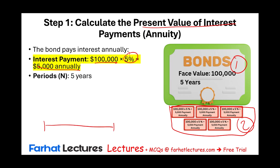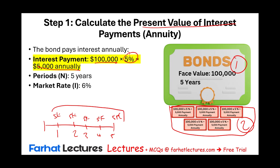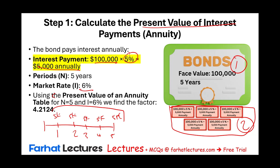On the timeline, the bond is paying five payments of $5,000 each — one through five. The investor wants to know how much these interest payments are worth today. They use the market rate to discount, and the market rate is 6%. So those payments are discounted at 6%. Let's look at the computation using the present value annuity table. The factor for n=5 periods and i=6% is 4.2124.